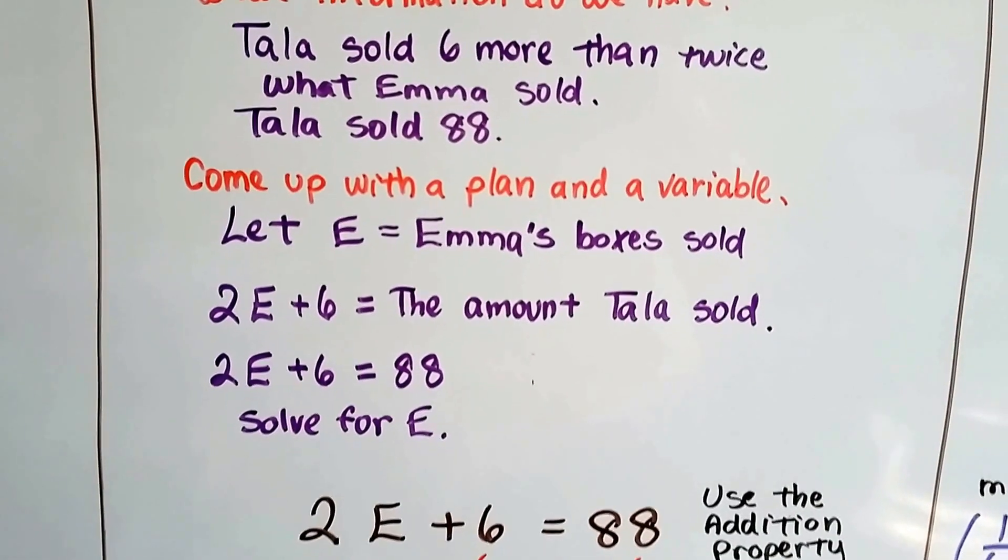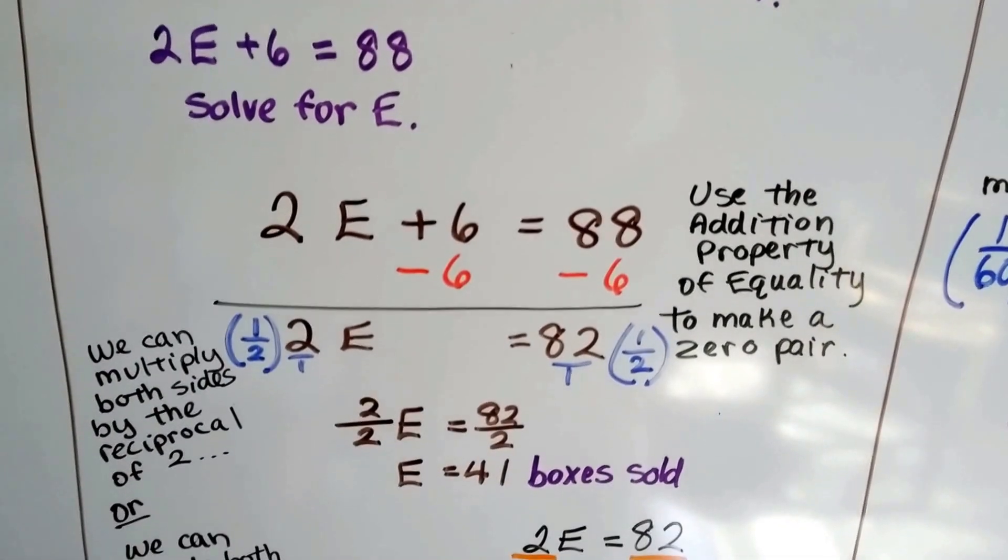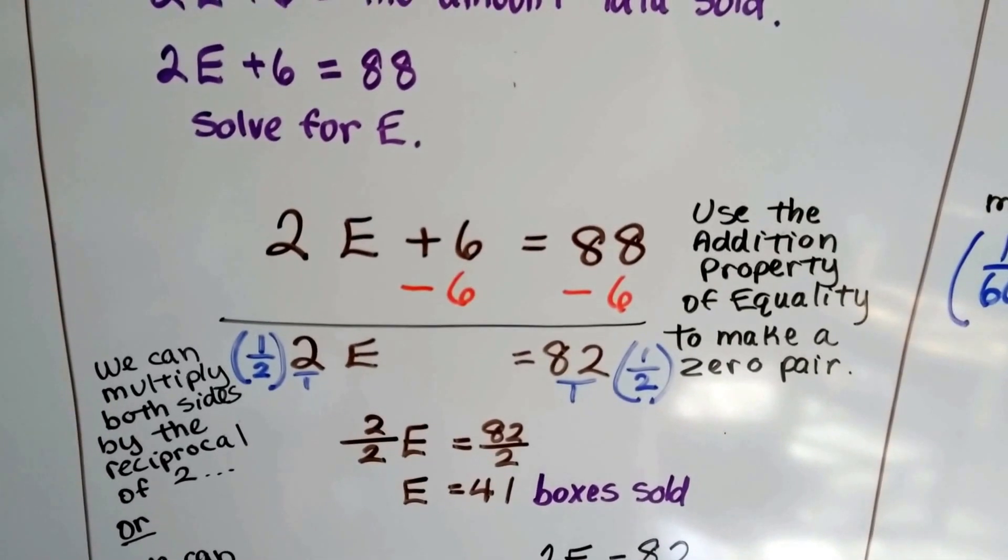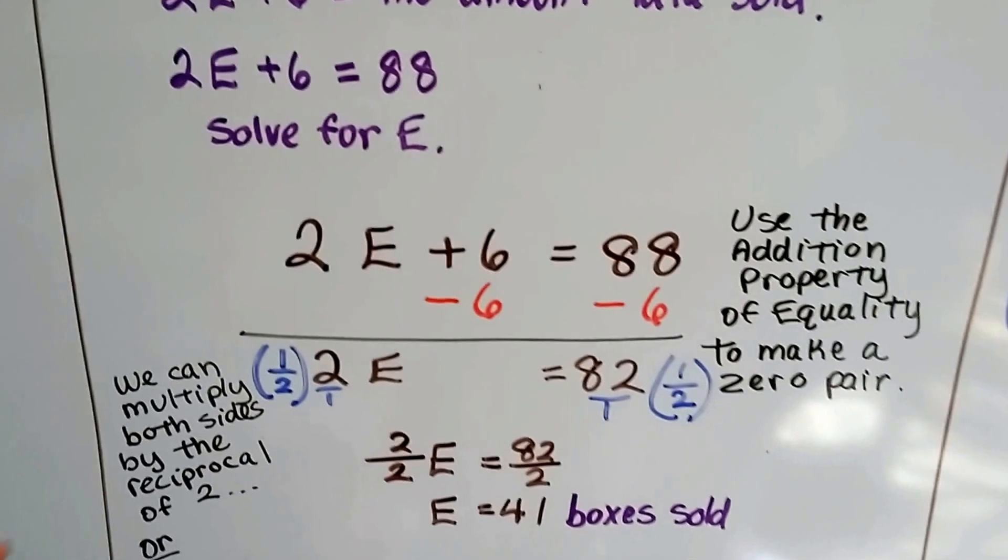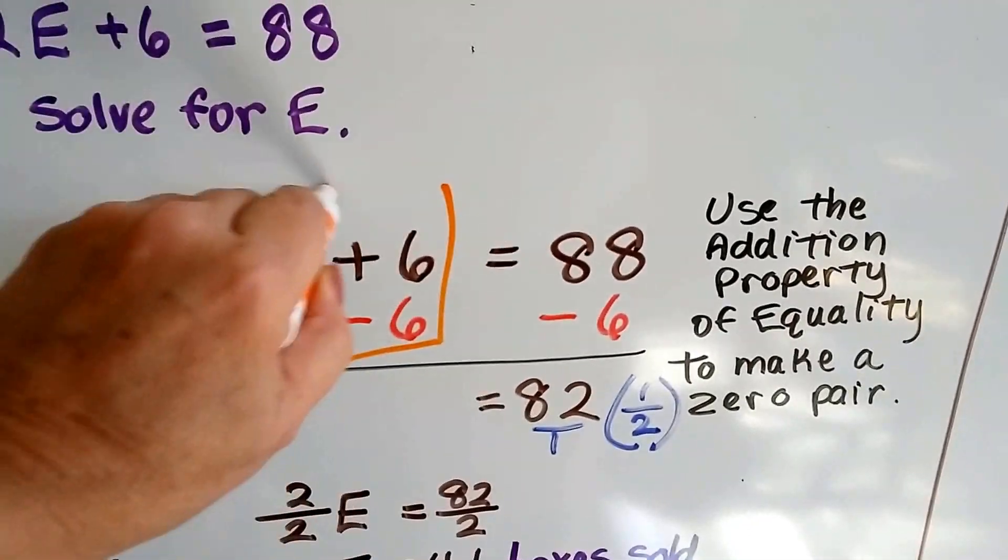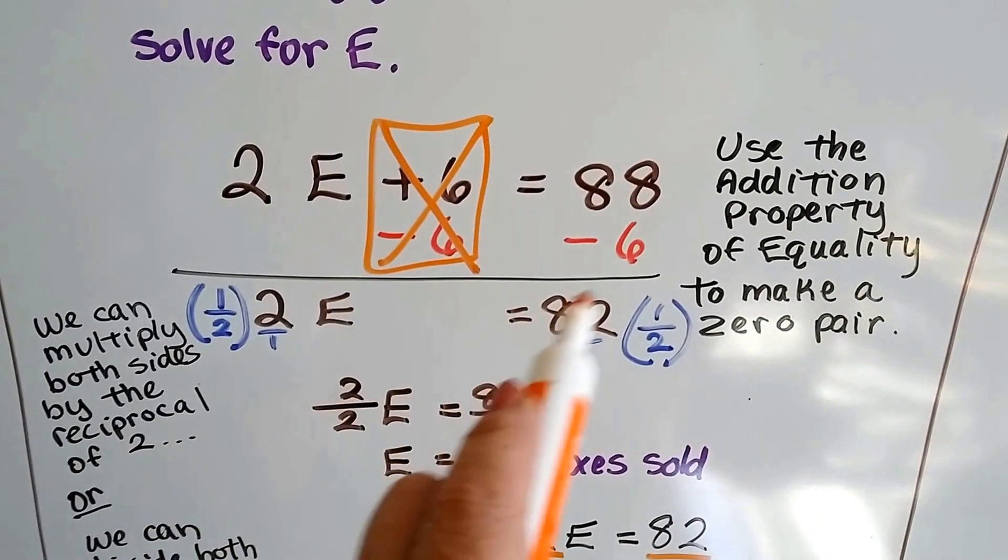All we have to do is solve for E. That's not hard. We've done these kinds of equations before. 2E plus 6 equals 88. We use the addition property of equality on each side of the equal sign to create a zero pair here. And now we get 2E equals 82.